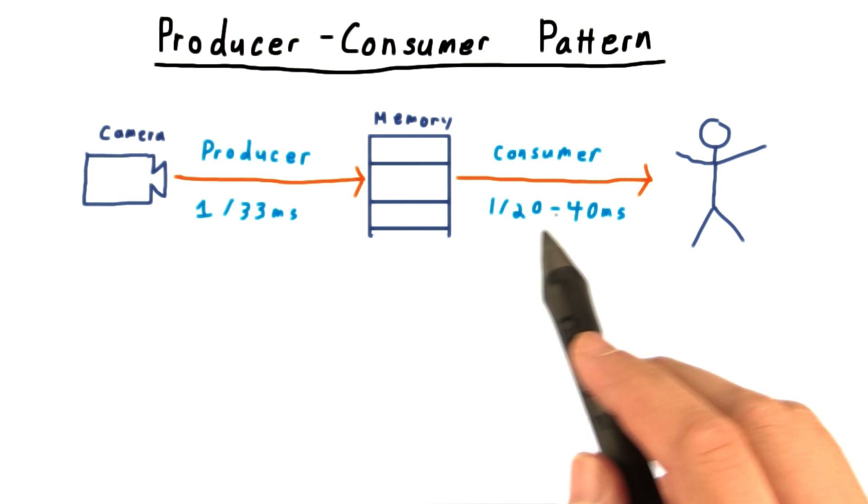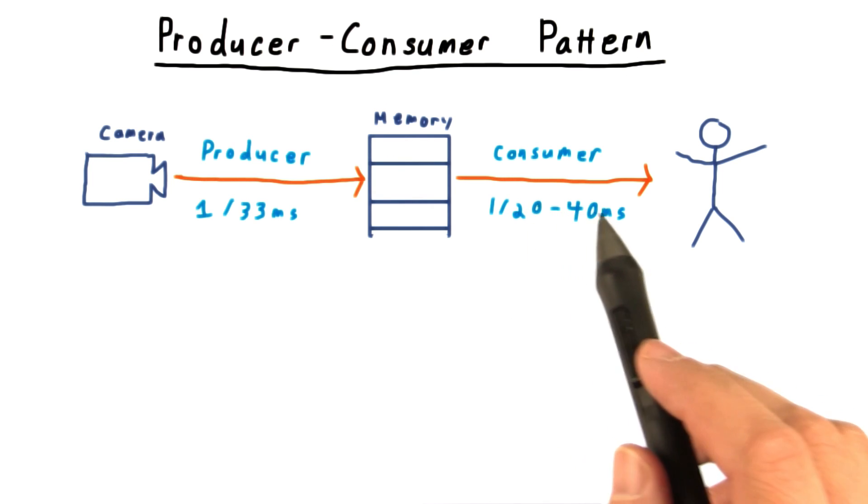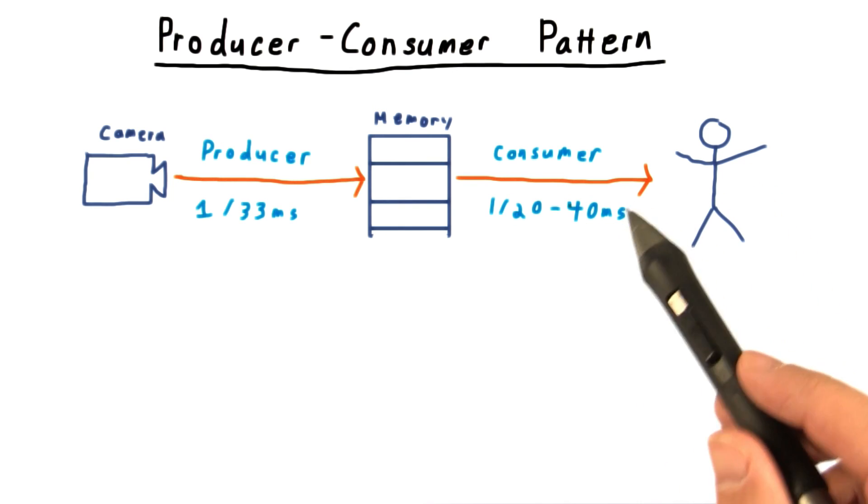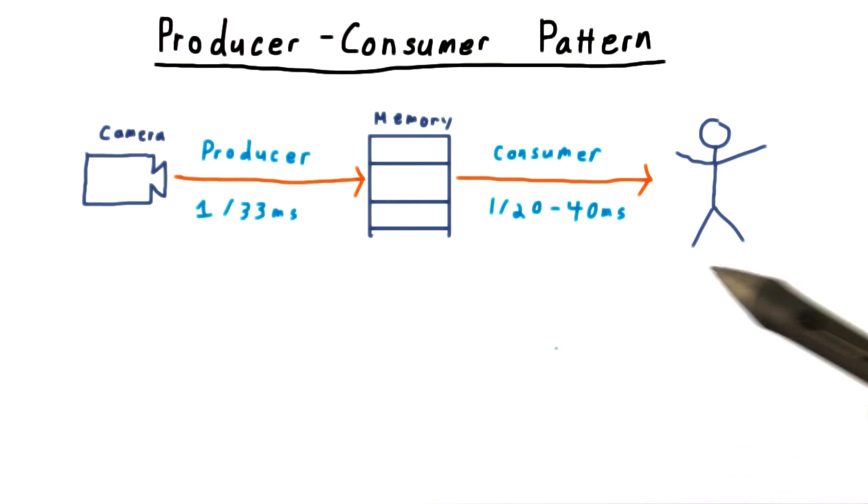And let's say that the image processing to find the people is variable, taking somewhere between 20 and 40 milliseconds, but on average less than 33. If it were more than 33, we could put more consumer threads here to do the work.